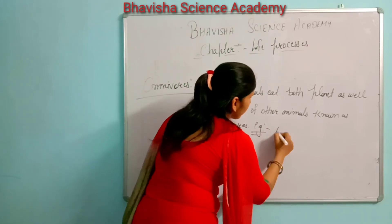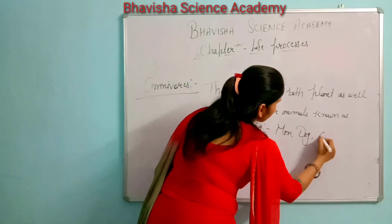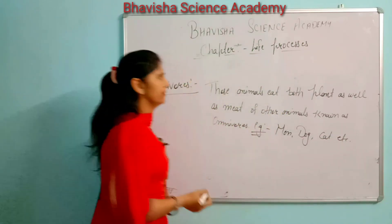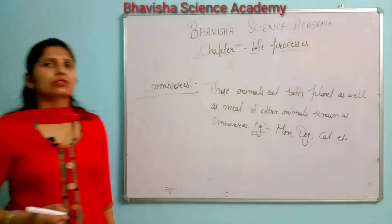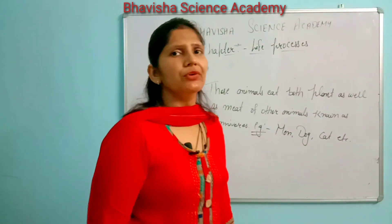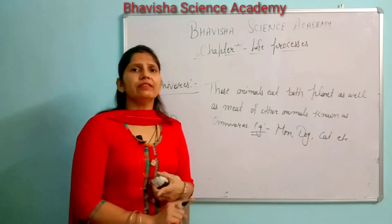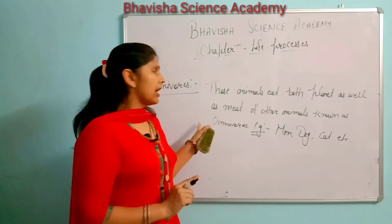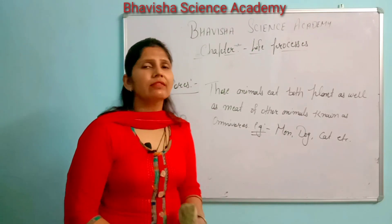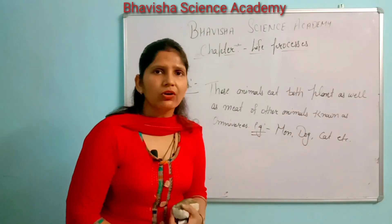Examples of omnivores are man, dog, cat, etc. So friends, on the basis of obtaining food, animals are mainly three types: first is herbivores, second is carnivores, and third is omnivores.